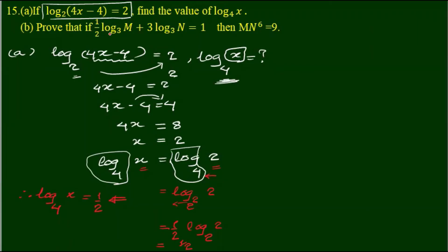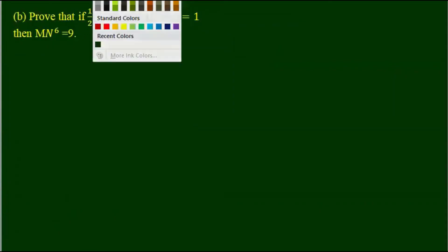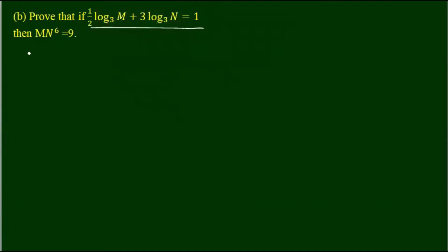Let's see if this is equal to 1 by 2. Log n base 3 plus 3 log n base 3 is equal to 1. If this is equal to 1 by 2, then this is equal to 2.